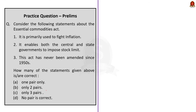Question 5 gives three statements about the Essential Commodities Act. Statement 1: The Essential Commodities Act is primarily used to fight inflation — correct. Statement 2: The Essential Commodities Act enables both Central and State Governments to impose stock limits — incorrect, because only the Central Government can impose stock limits; state governments can only implement them. Statement 3: This Act has never been amended since the 1950s — also incorrect, because the Essential Commodities Act was amended during COVID times. Therefore, only one statement is correct, and the answer is option A.